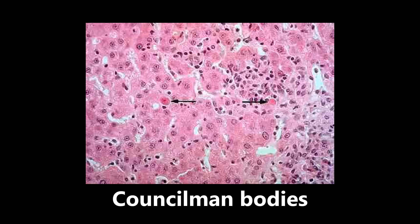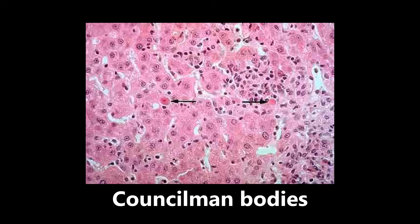This next image is an example of Councilman bodies. These are eosinophilic globules — very pink as we can see — representing dying hepatocytes surrounded by normal parenchyma. So what we're seeing here are dying hepatocytes due to liver damage.